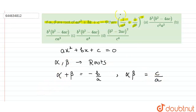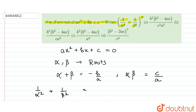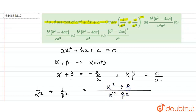Now we have to find the value of (1/α² + 1/β²)². First we will find the value of 1/α² + 1/β², then we will do the squaring of this. Taking the LCM, it will be equal to (α²β²) in the denominator and (α² + β²) in the numerator.